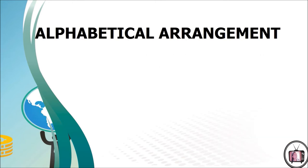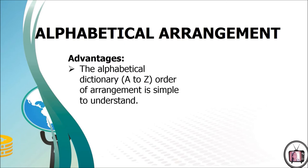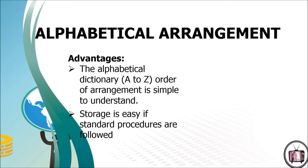In alphabetical arrangement, there are advantages and disadvantages. Most people are familiar with alphabetical filing; hence, it is easy and simple to understand and operate. Storage is easy if standard procedures are followed. The system is highly elastic so that new headings can be introduced at any point without disturbing the classifications. It is self-indexing, so no separate index is needed. Chances of misfiling are minimized.